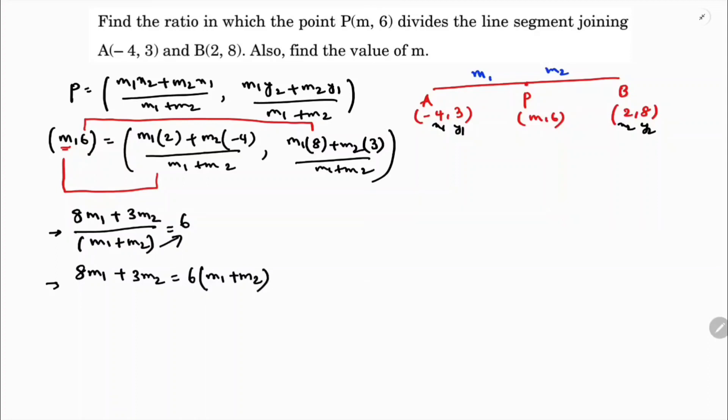Now here 8M1 + 3M2 equals 6M1 + 6M2. Bring M1 towards one side here and take 3M2 to the other side, 8M1 - 6M1 equals 6M2 - 3M2. So if we simplify further here you will get 8M1 - 6M1 is 2M1, 6M2 - 3M2 is 3M2.